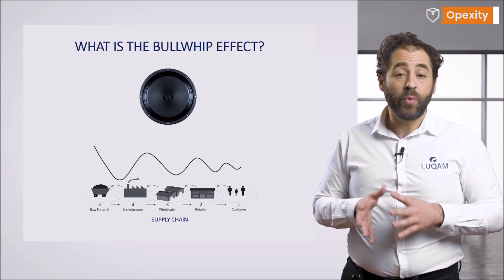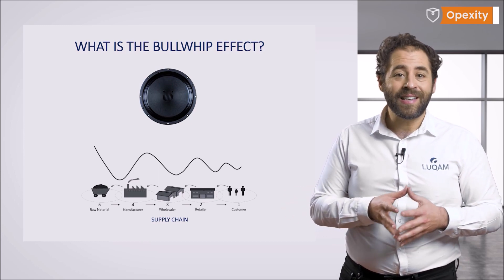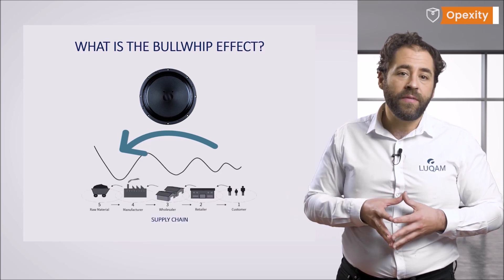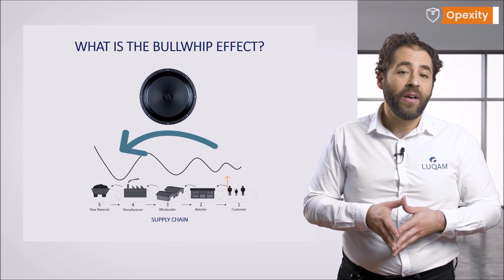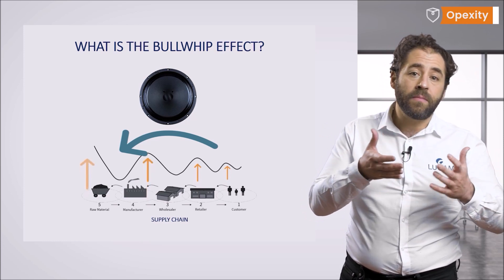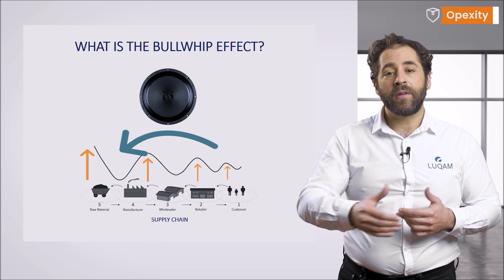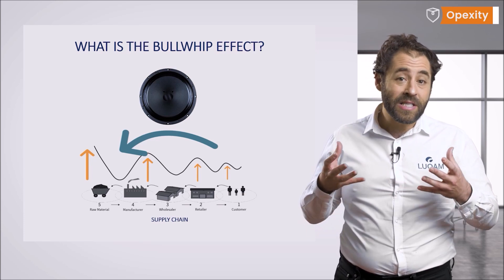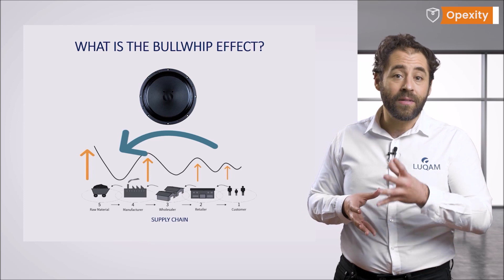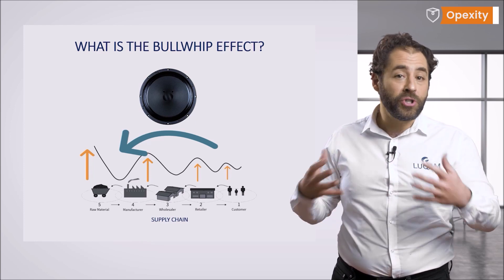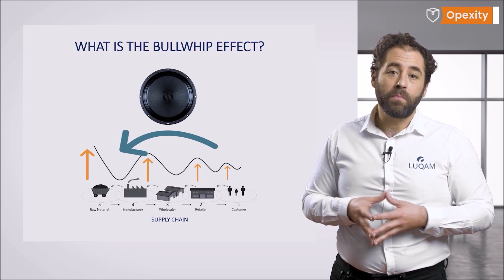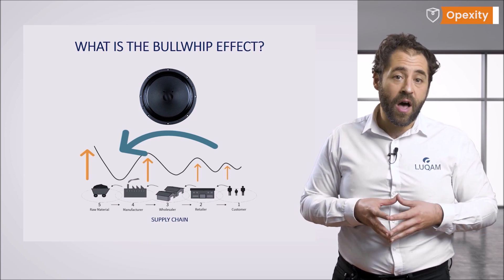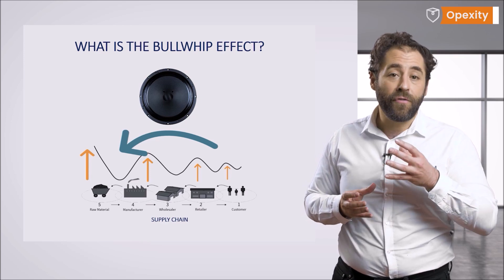The bullwhip effect, often called a whiplash effect or whipsaw effect, consists in enhancing the transfer of changes in the demand in the chain of supplies. Relatively small deviations of the demand communicated by the end customers increase as the information on the demand goes up the chain to the producer and further on to the suppliers. The information flowing through the supply chain in the form of orders does not reflect the changes in the demand in the retail market, but includes a number of managerial decisions regarding the inventory. The orders placed with the supplier include elements needed to replenish cyclical stocks and safety stocks to the level ensuring satisfaction of future demand.